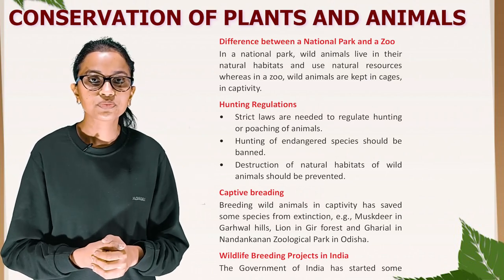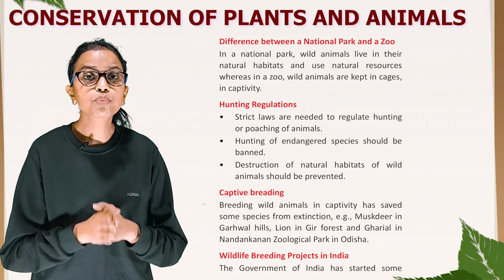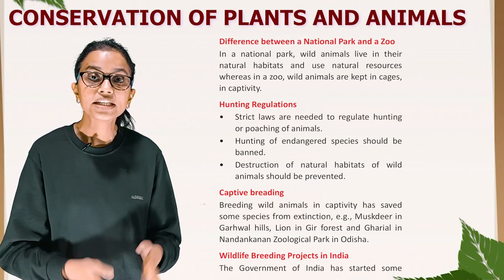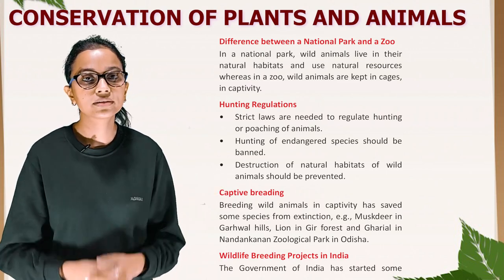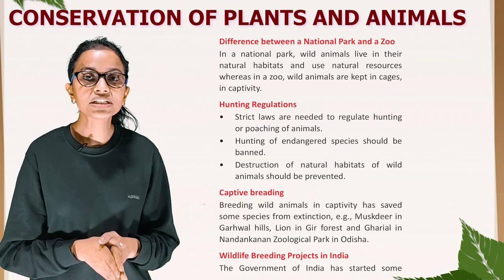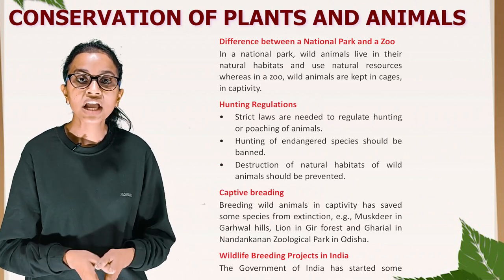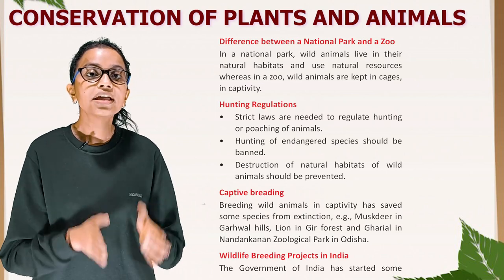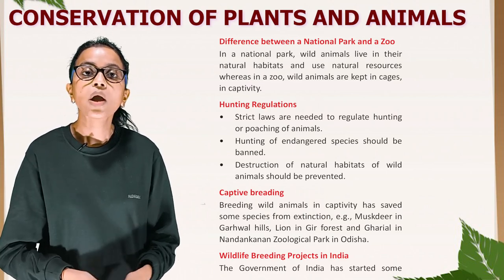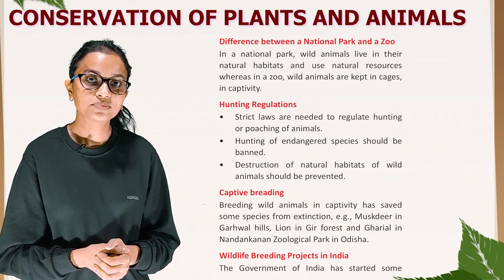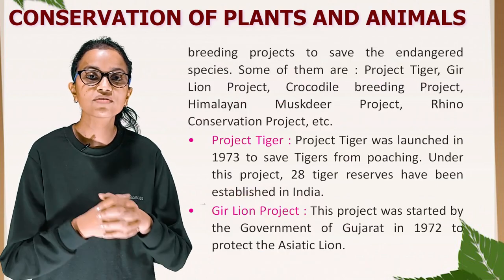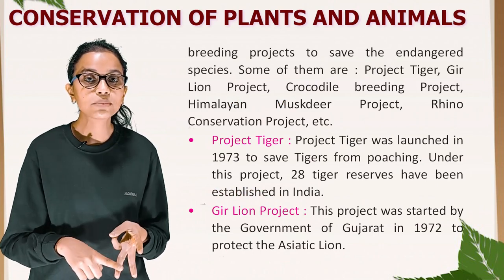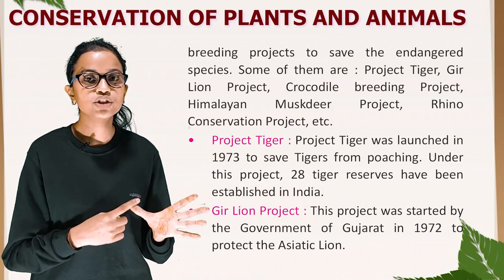Hunting regulations: strict laws are needed to regulate hunting or poaching of animals. Hunting of endangered species should be banned, and destruction of natural habitats of wild animals should be prevented. Captive breeding: breeding wild animals in captivity has saved some species from extinction — examples include musk deer in Garhwal hills, lion in Gir forest, and Gharial in Nandankanan Zoological Park in Odisha. The government of India has started breeding projects including Project Tiger, Green Lion Project, Crocodile breeding project, Himalayan musk deer project and Rhino conservation project.